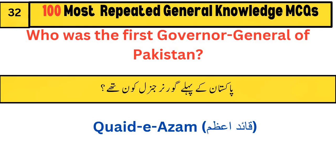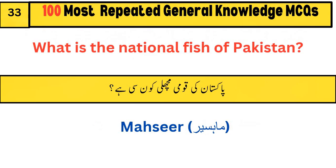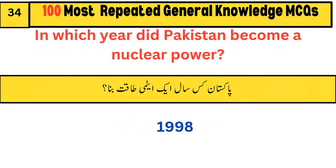Who was the first governor general of Pakistan? Quaid-e-Azam. What is the national fish of Pakistan? Mahseer.